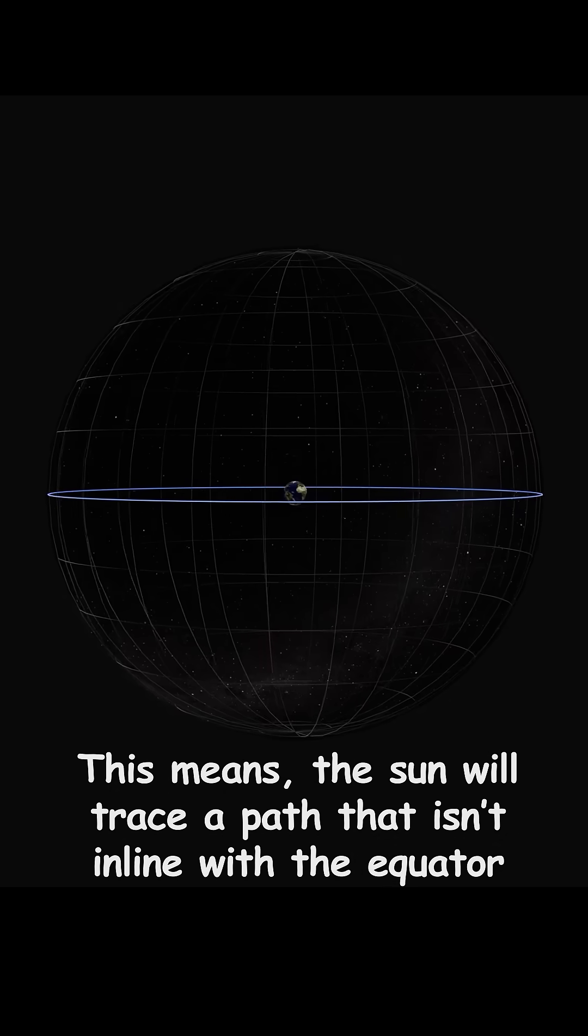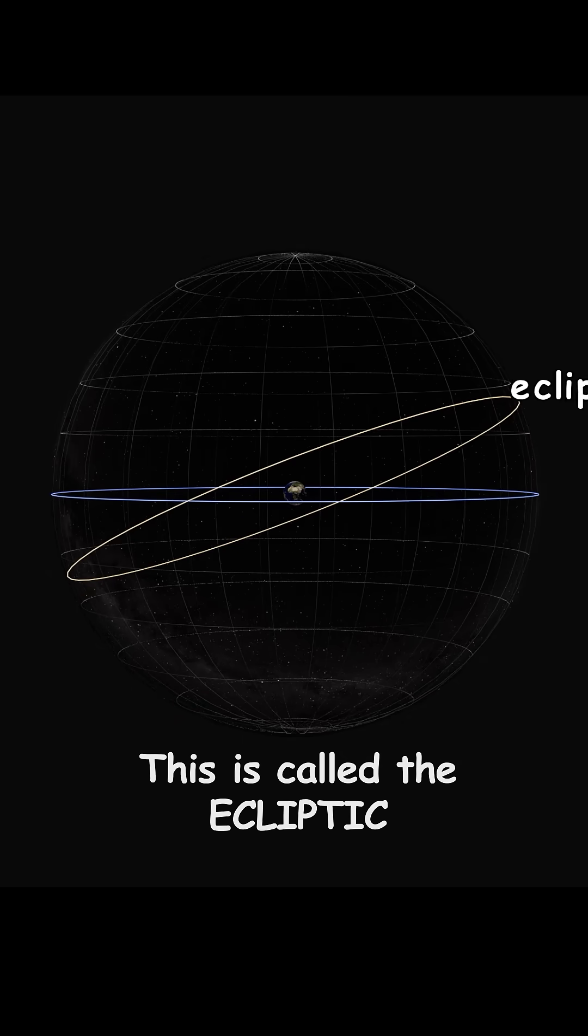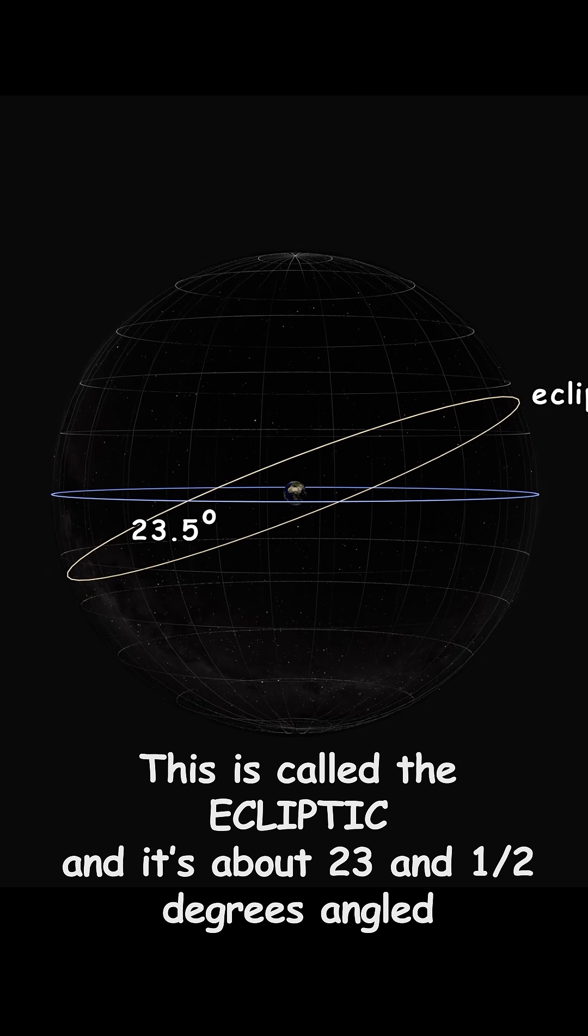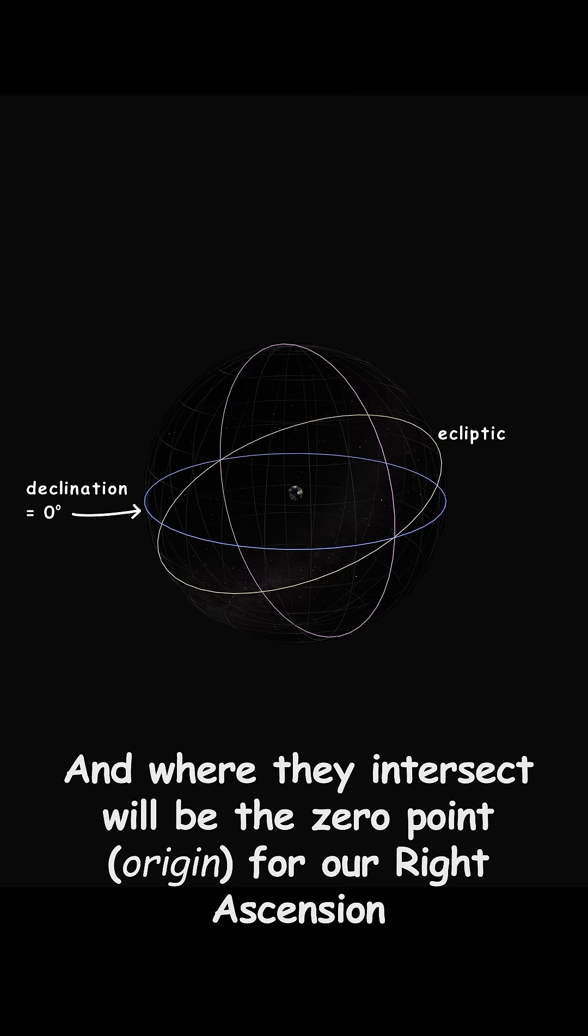This means, looking up, the Sun will trace a path that isn't in line with the equator. This is called the ecliptic, and it's about 23.5 degrees angled from the starting declination, and where they intersect will be taken as zero for right ascension.